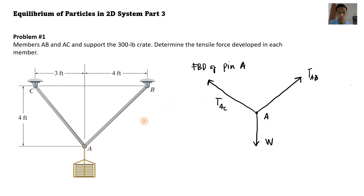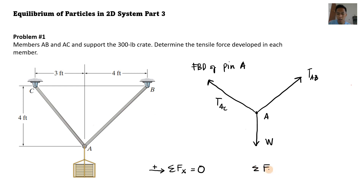To maintain equilibrium, we apply the condition that the summation of forces along the x-axis equals zero, and the summation of forces along the y-axis equals zero. Our positive x-direction is to the right, and upward forces are positive. This is a two-dimensional system because all forces act only on the x and y axes.